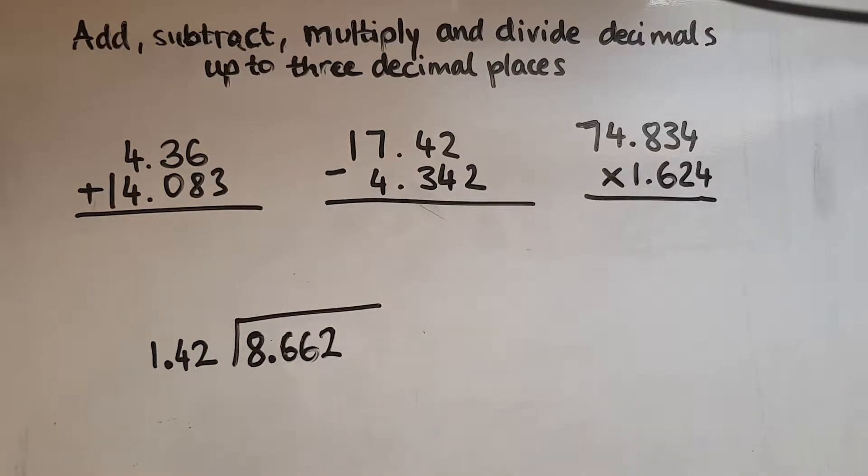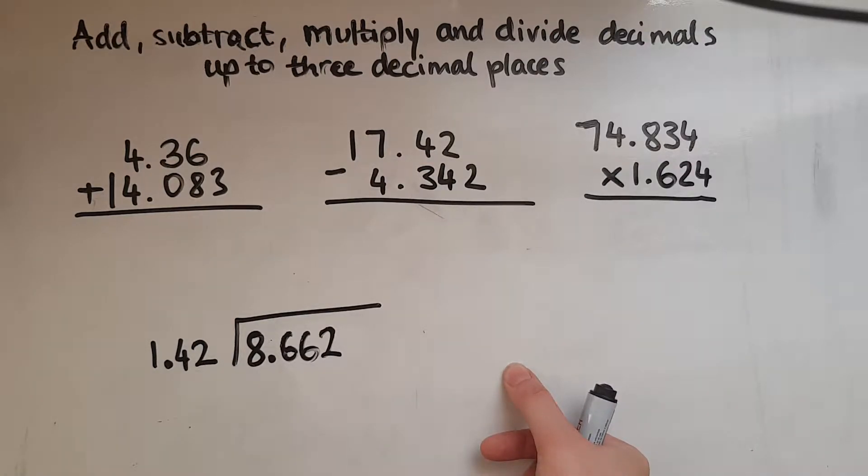Adding is pretty similar to adding whole numbers. You've got to line them up so that the value of the digits matches with the ones underneath. So the units matches with the units, tens matches with the tens.